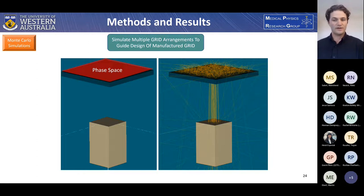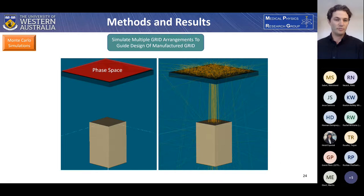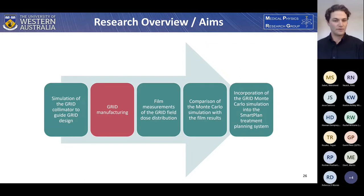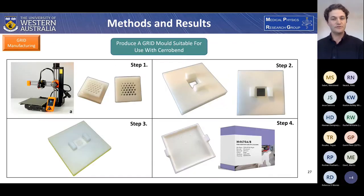The open-to-blocked area ratio and the maximum field size were varied across a total of 180 different grid arrangements, and their peak-to-valley ratios and output factors were analyzed. Following this, the grid with a good compromise between output factor and peak-to-valley ratio was chosen for the manufacturing stage.